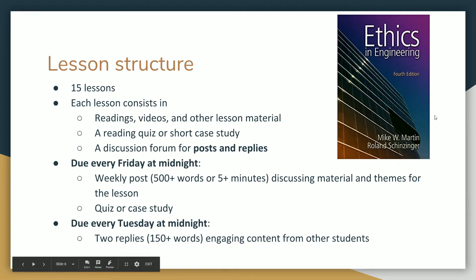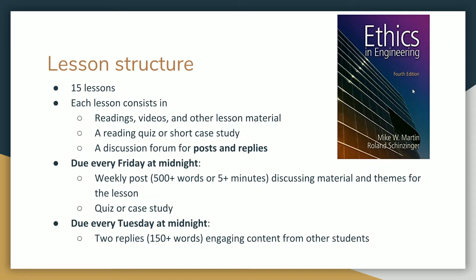There's a lot of reading for this class, but there's only one required book: Martin and Schinzinger, Ethics in Engineering, fourth edition. There will be quizzes and assignments that refer to page numbers in the fourth edition, so if you have a different edition it won't work. You should be able to find this book in the NJIT library, buy used copies in the bookstore, or find used copies on Amazon for around $30. You won't need it until the second week for Lesson 2, but previous editions will not work, so please get the fourth edition.